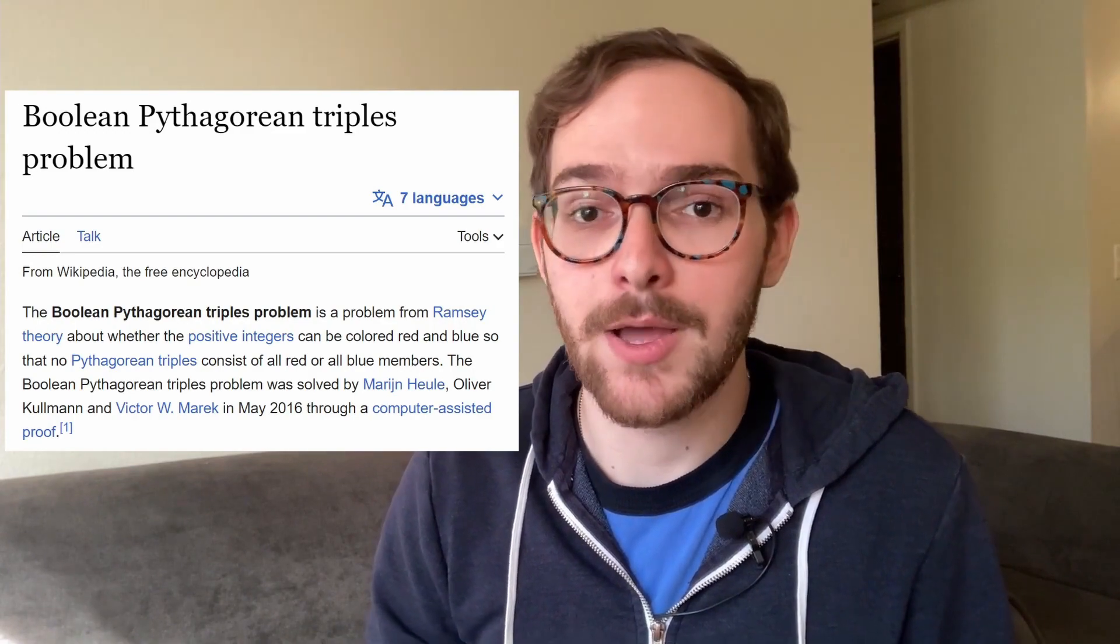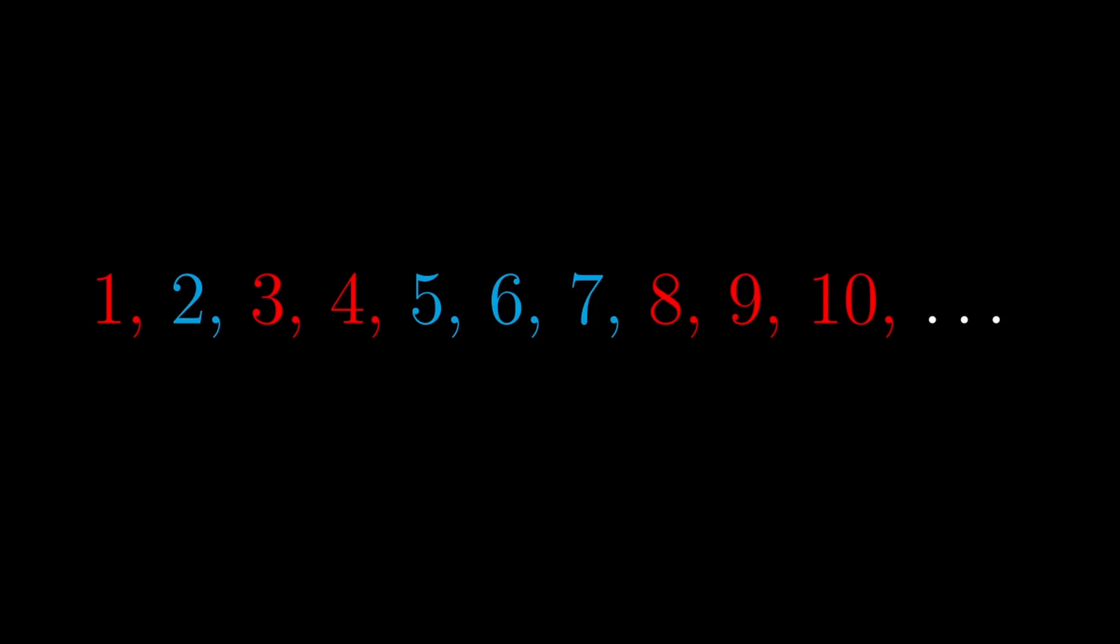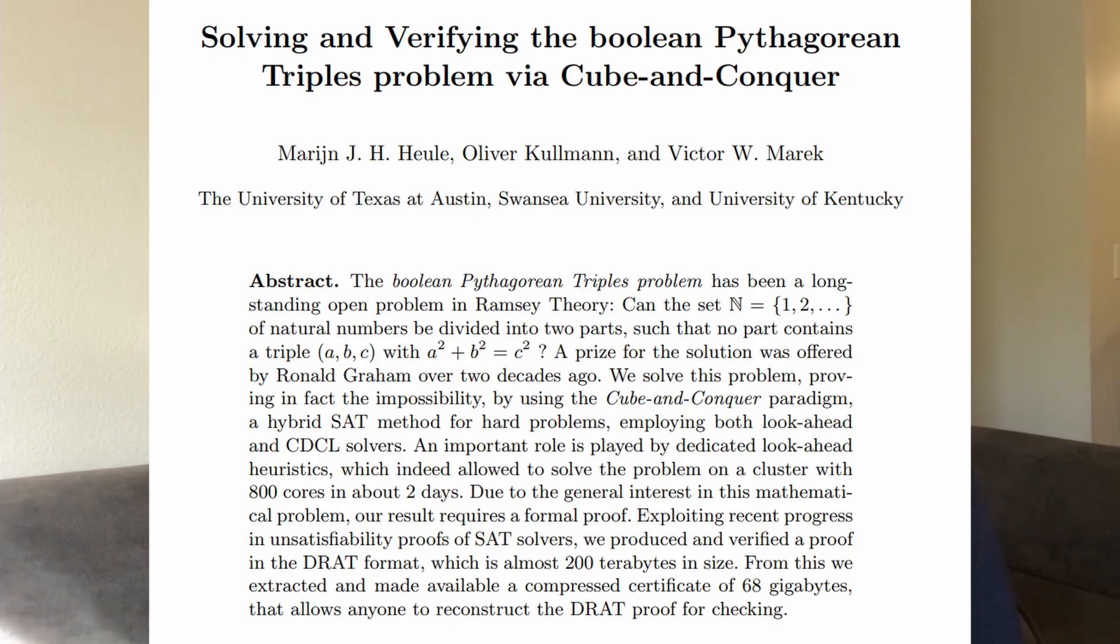A particularly famous example of a SAT solver being used in math research was in 2016, when one was used to resolve the Boolean-Pythagorean triples problem. This problem asked if you can color the positive integers red and blue, so that no Pythagorean triple is either all red or all blue. The answer is no, and the 68 gigabyte proof was generated after two days of computation by a SAT solver.